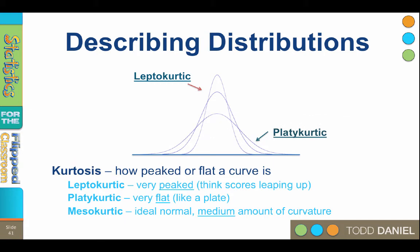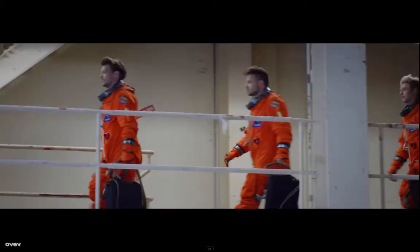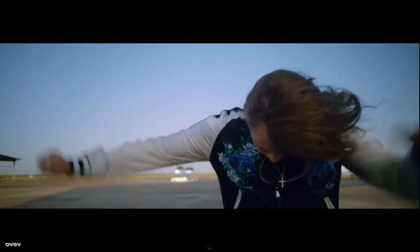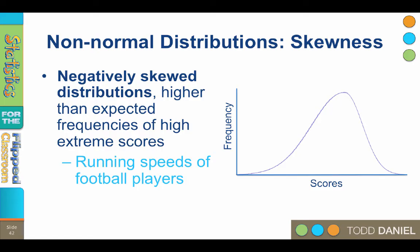Another thing that can happen to a curve is when the scores are pulled out in only one direction. When the scores are dragged out in only one direction, this creates a skew in our curve. Therefore, we need to talk about the skewness of our distribution. Negatively skewed distributions have a higher than expected frequency of high or extreme scores on the right, and the tail is pulled out to the left end of the number line on the x-axis.